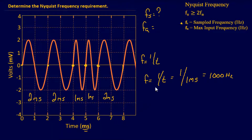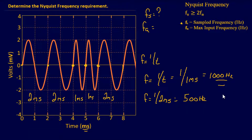Just to verify: the smaller the time period, the bigger the frequency. F equals one over two milliseconds gives 500 Hz. So the maximum input frequency, f of A, is one kilohertz. We want to determine f of S, the sampling frequency, which must be greater than or equal to two times the maximum input frequency. Two times one kilohertz is two kilohertz, and that is your final answer.